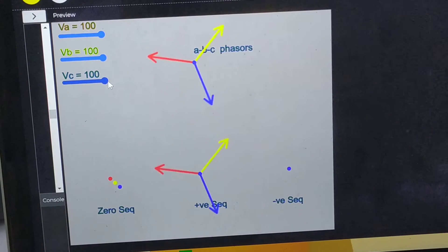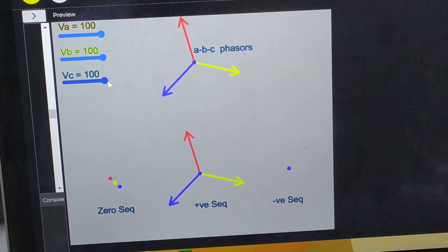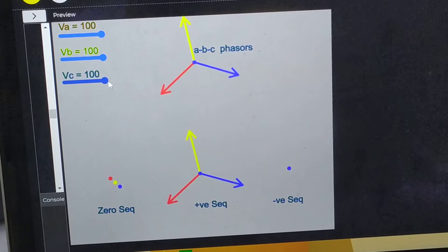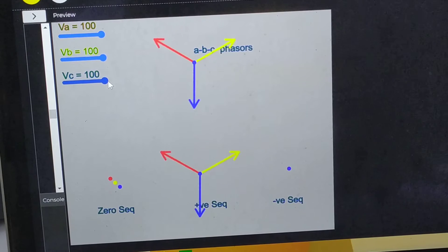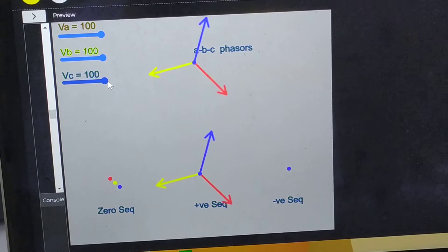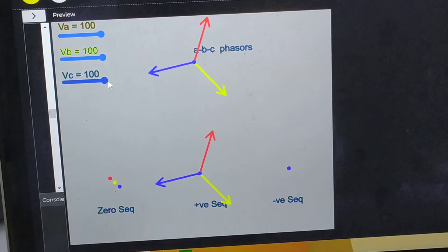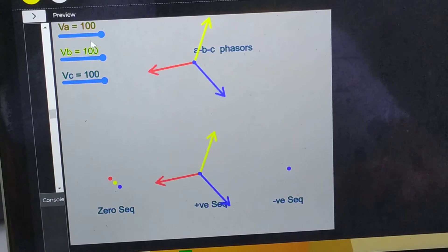That is positive sequence A phase, positive sequence B phase and positive sequence C phase, and zero sequence is zero and negative sequence is zero. Now, if I make any changes so that the system becomes unbalanced, that should get reflected in existence of zero and negative sequence components. Right now both are zero, so let me distort the A phase voltage slightly.